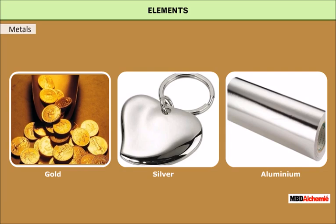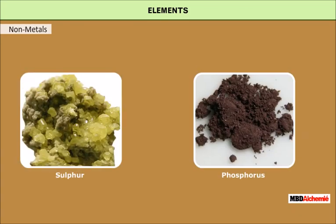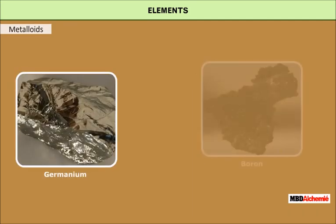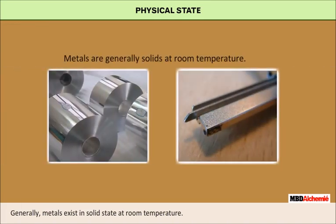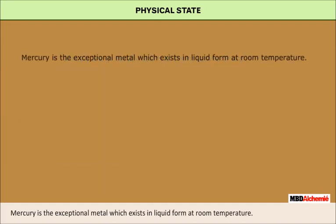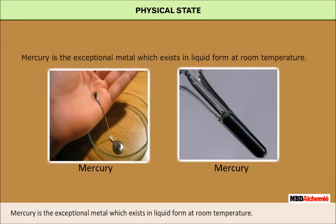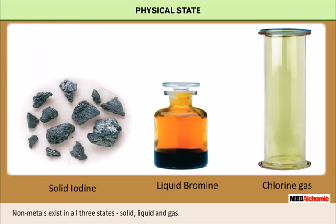Let's look at the physical state. Generally, metals exist in solid state at room temperature. Mercury is the exceptional metal which exists in liquid form at room temperature. Non-metals exist in all three states: solid, liquid and gas.